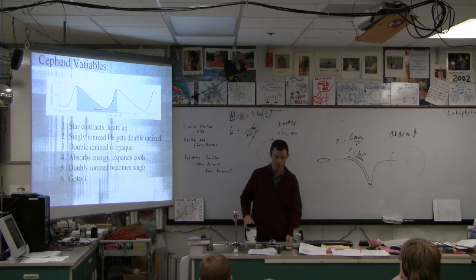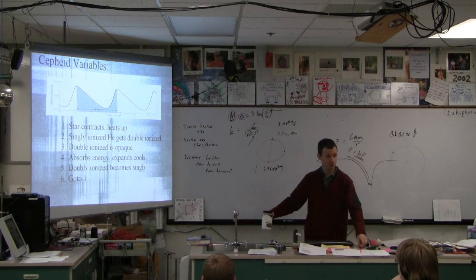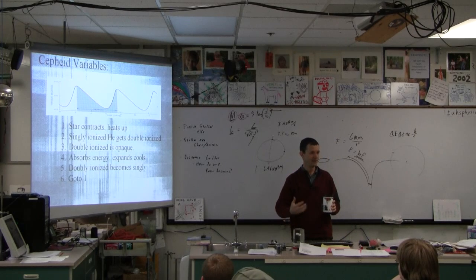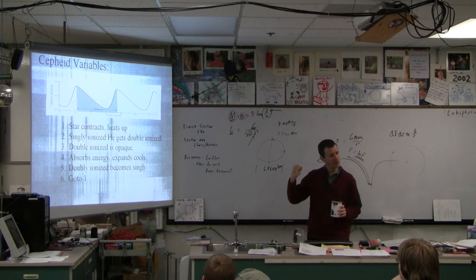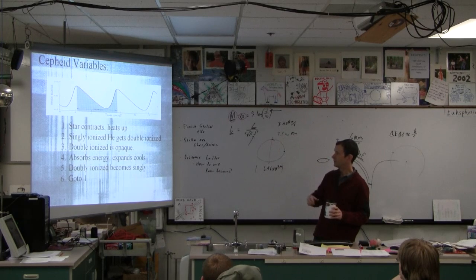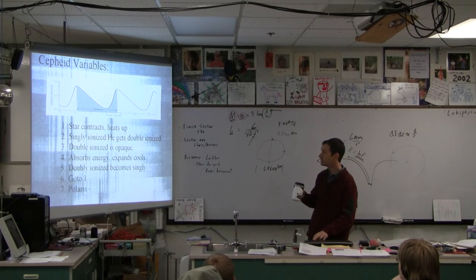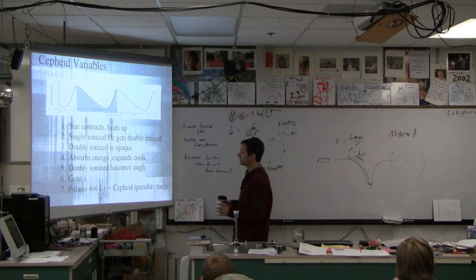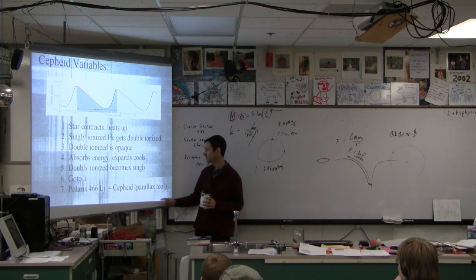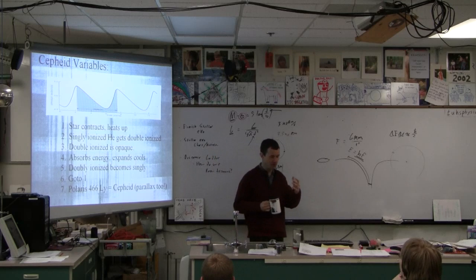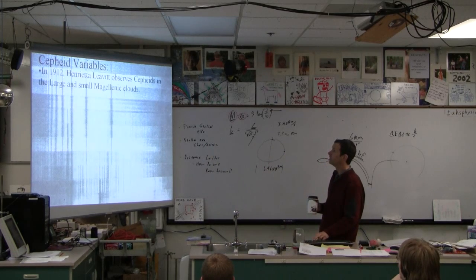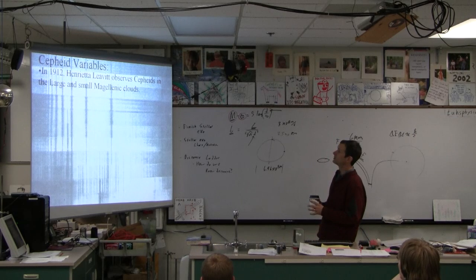Now Cepheid variables are a bit like gongs in percussion. The bigger the gong, the slower they vibrate. A big Cepheid variable takes a longer time to go through this than a small Cepheid variable. So if you graph, and Polaris is only 466 light years away, we have parallax to this. It is a Cepheid variable, so we know how far away it is just by geometry, and then we know how bright it really is.